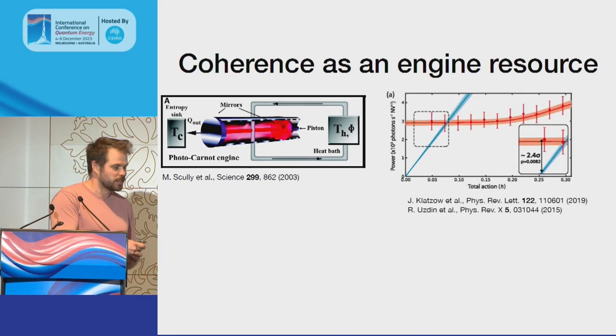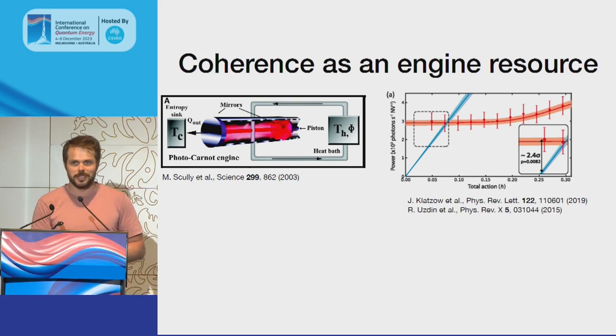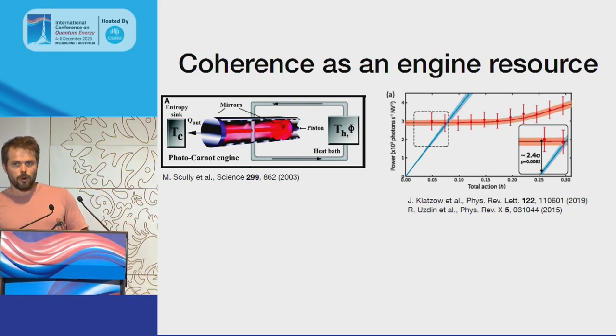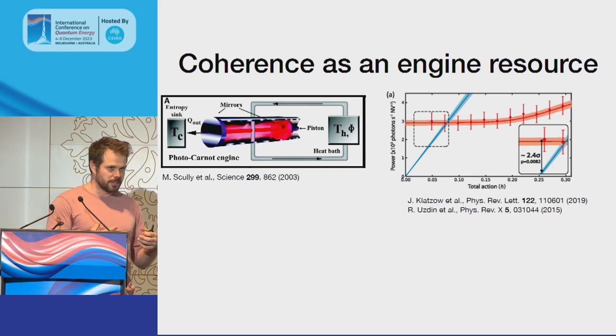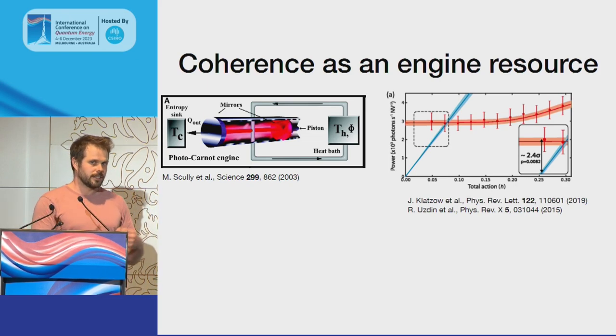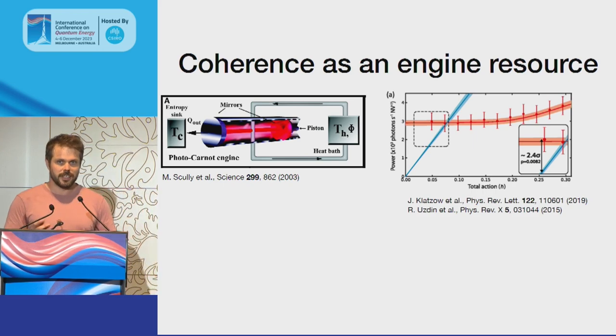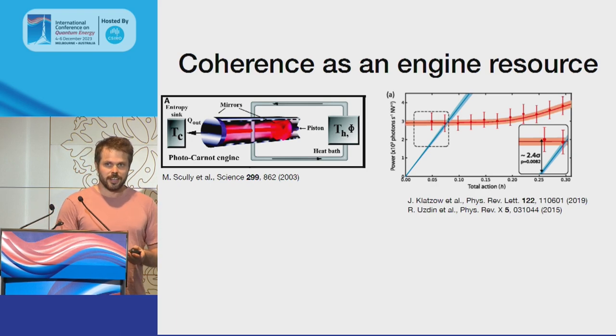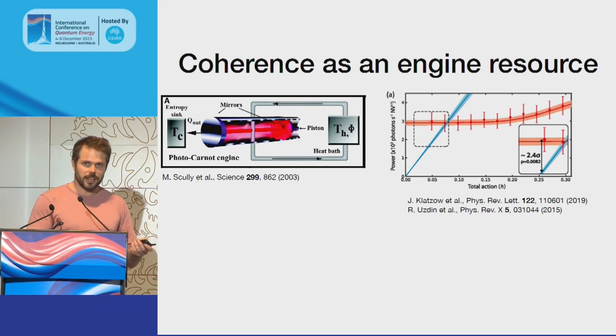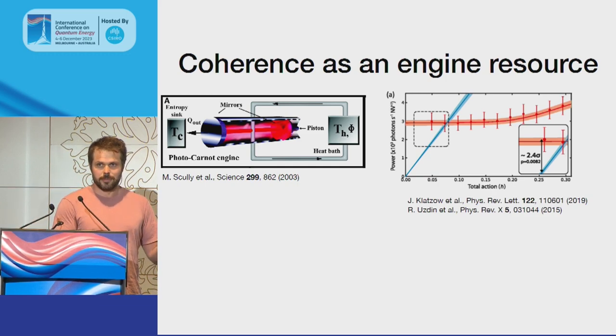This experiment was done a few years ago. What they found is if they run an engine cycle where during the cycle the working substance contains coherence, and you run that cycle really quickly, you can get more power output than if the working substance didn't contain coherence. If it doesn't contain coherence and you rapidly decrease the time of the cycle, there's this dissipative effect and the power goes to zero.